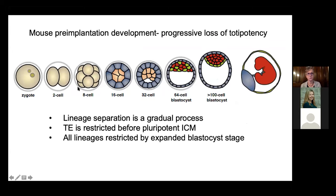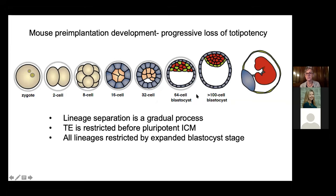What we know from experiments from my lab and many others is that we start with a totipotent cell — one that can make placenta, extra-embryonic tissues, and the fetus itself. The zygote does this, but individual cells at the two-cell stage can also do it. Even at the eight-cell stage, a single blastomere, when aggregated with other cells, can make all three cell types of the blastocyst. However, as we go from the eight-cell stage through to the blastocyst, cells start sticking together more, become polarized on the outside, generate a polarized epithelium. By the 64-cell blastocyst, cells become restricted to cell fate — but it's a gradual process. The trophectoderm is actually restricted before the inside cells, probably coincident with its polarity.